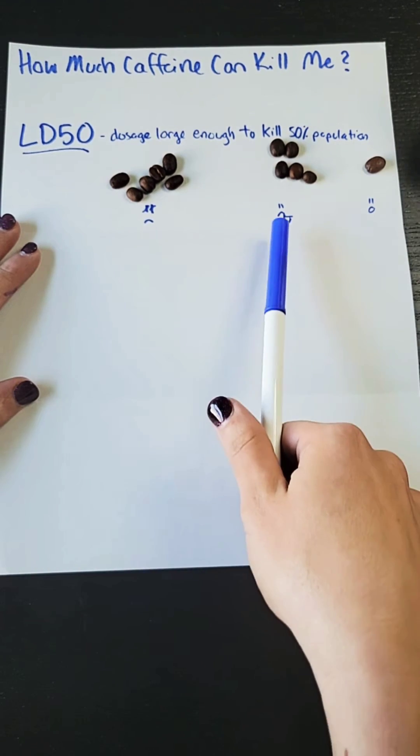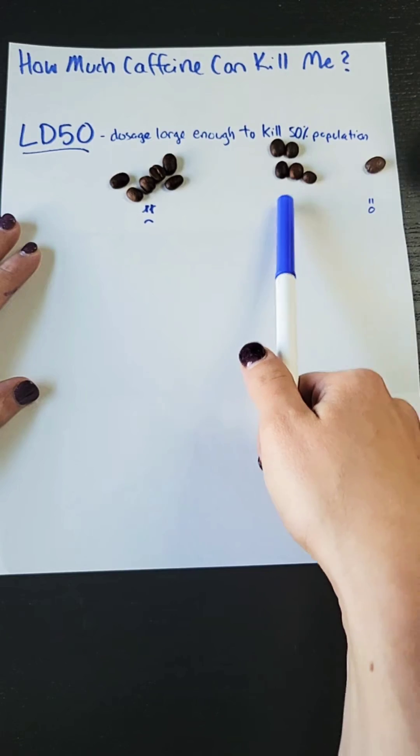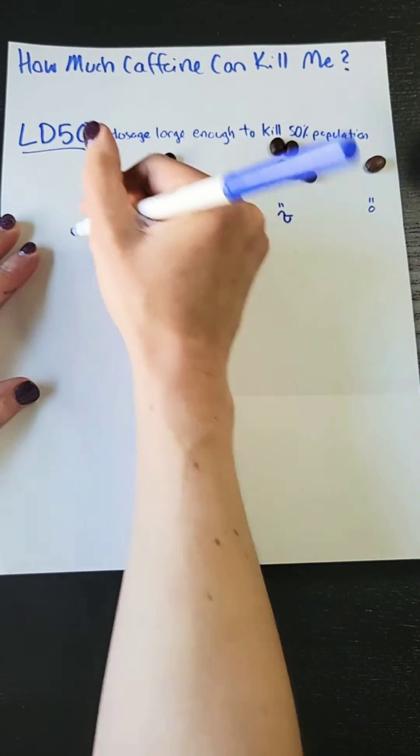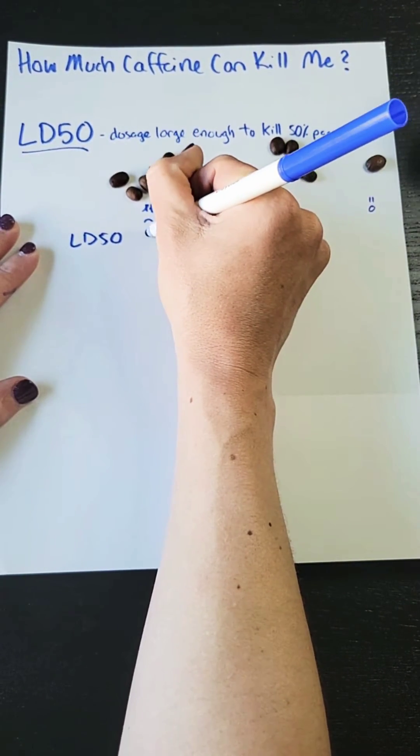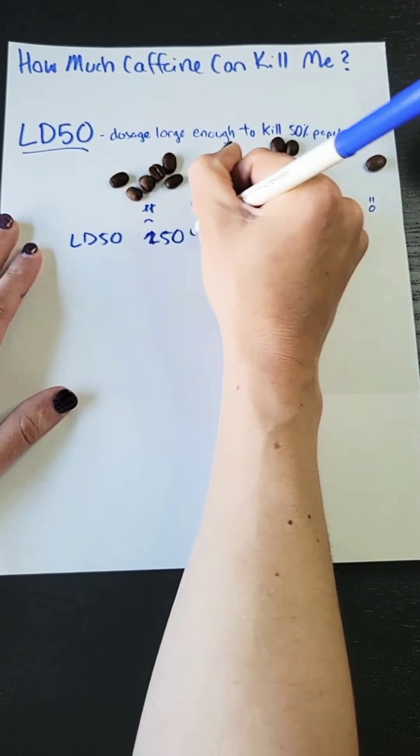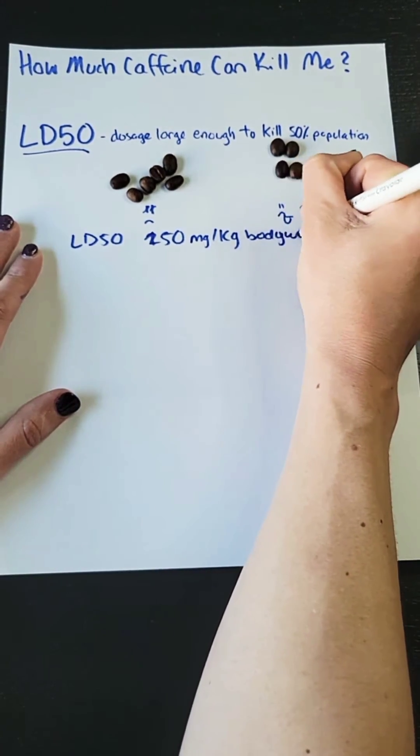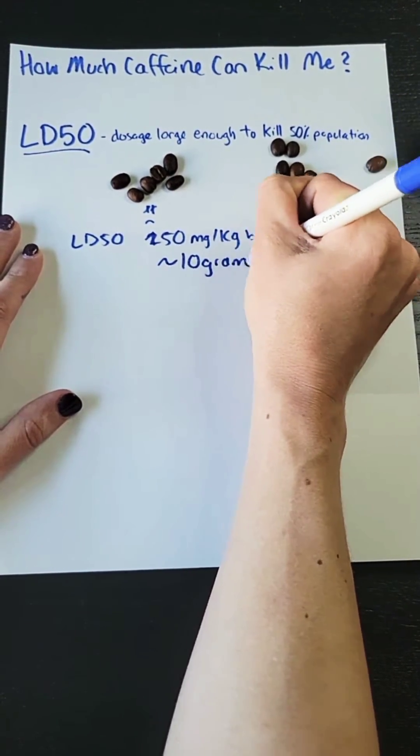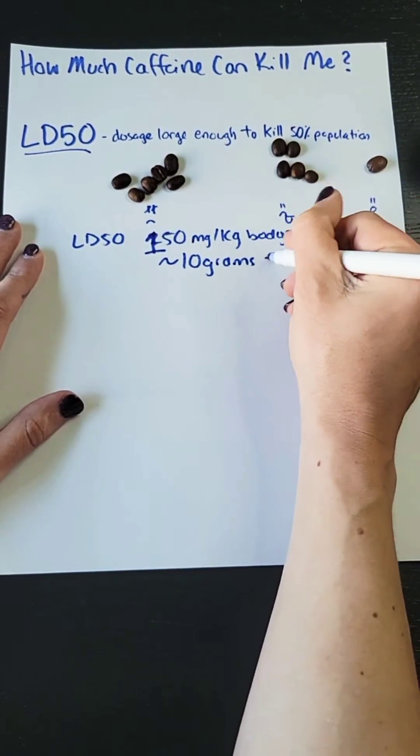At the LD50, the people that are still alive might not be feeling too good, they might still be feeling sick, but they're still alive. For caffeine, the LD50 is about 150 milligrams per kilogram of body weight, which essentially equates to about 10 grams. So for most people, 10 grams is going to be the lethal dose.